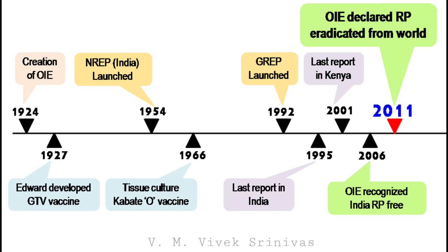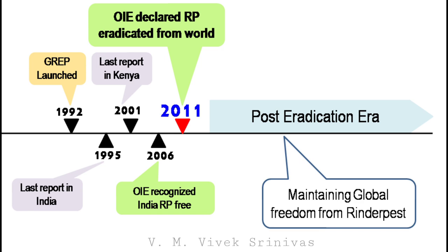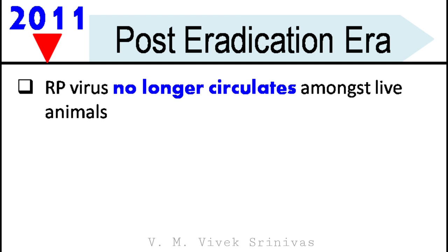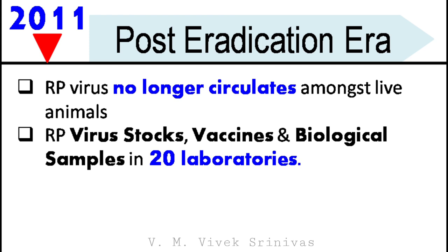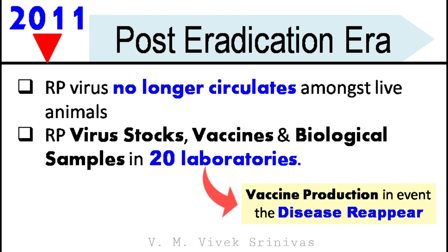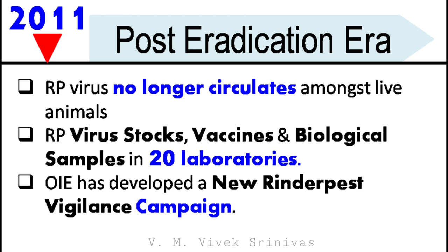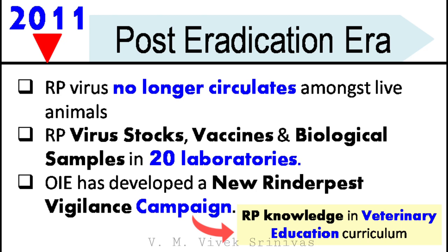Rinderpest is now history. We are now in the post-eradication phase, maintaining global freedom from Rinderpest infection. The virus is no longer among live animals, so vaccination is now prohibited. However, virus stocks, vaccines, and biological samples are still present in around 20 laboratories across the world, mainly for vaccine production in the event the disease were to reappear due to an accident or an act of bioterrorism. OIE has developed a new Rinderpest vigilance campaign to ensure Rinderpest knowledge in the veterinary education curriculum, along with sero-surveillance of livestock.